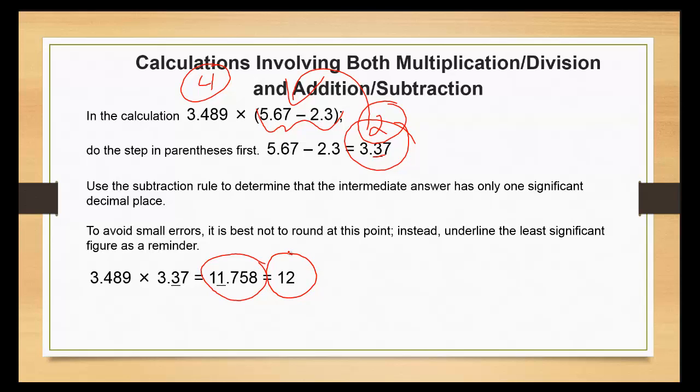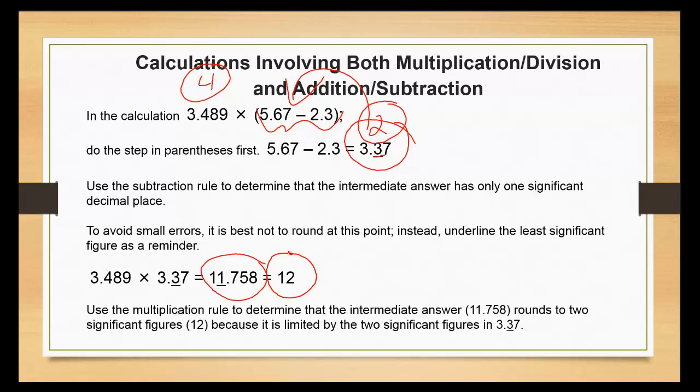Use the multiplication rule to determine that the intermediate answer rounds to two significant figures because it is limited by the two significant figures in the 3.37. And that's how you perform calculations with significant figures.